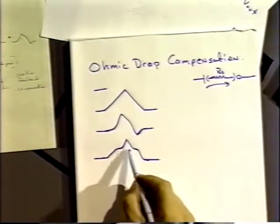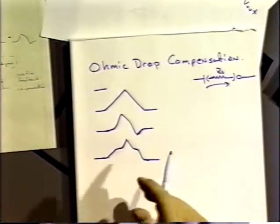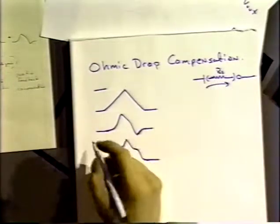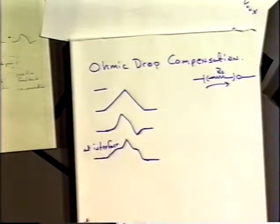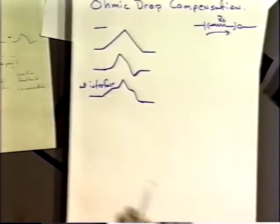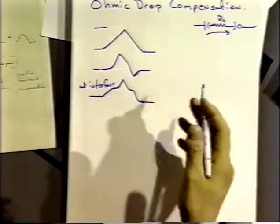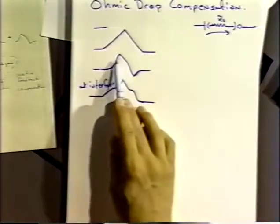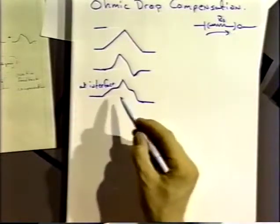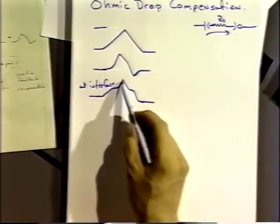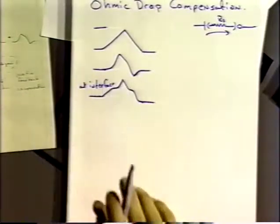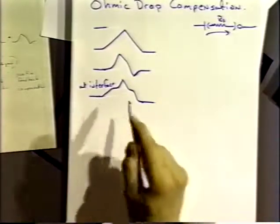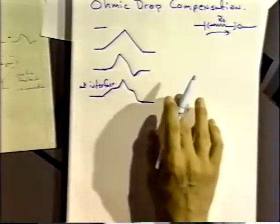Those little dips and bumps are the IR drop we're seeing at that point. So at the interface, we're actually applying not a triangle wave but this weird shaped voltage. That causes problems because now the CV wave will not be proper — it won't have the proper scan rate. What is the scan rate of that particular voltage? It's going to change at every point. All our theory is only for a constant scan rate, not for these variable scan rates. So we don't want the IR drop to interfere.